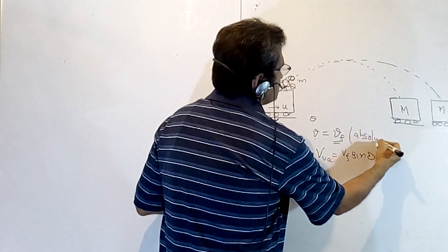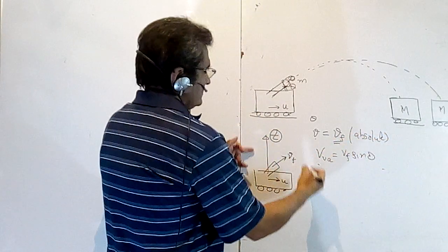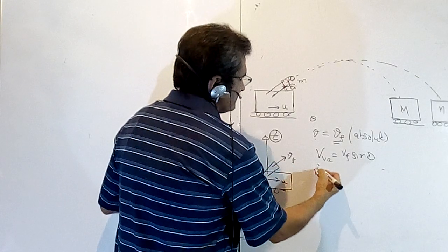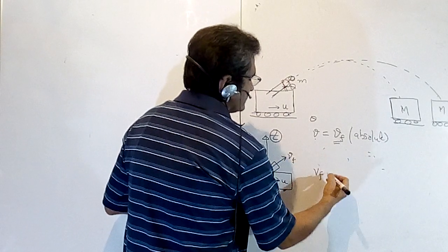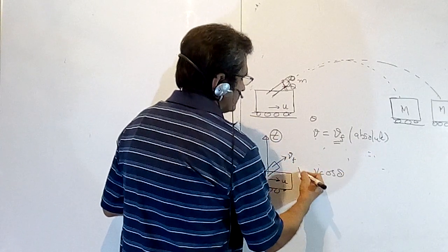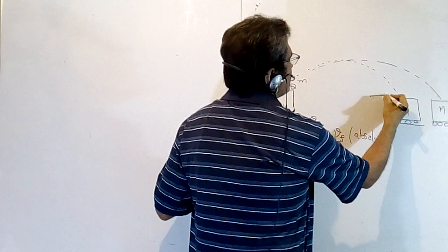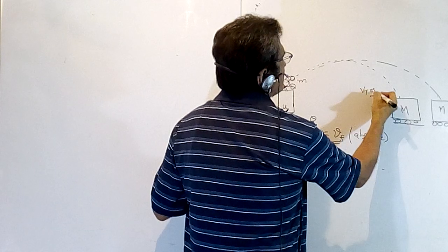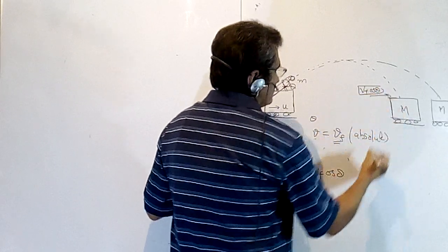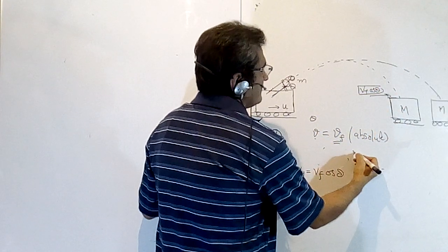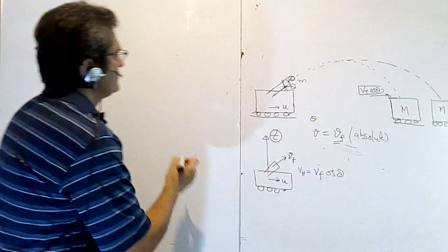The check is that your horizontal velocity will be Vf cos theta in the absolute frame. So here it is landing at Vf cos theta. Now conserve the momentum: M of cannon times Vf cos theta would be equal to M of that body (vehicle which is moving) plus m which has now landed in the cannon, into the final velocity of the body.